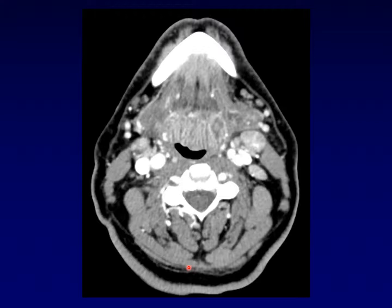The palatine tonsils can become infected, but the lingual tonsils will occasionally become infected as well, and have a very similar appearance. Once again, you can see that tiger stripe pattern, but now we're a little more inferior in the neck at the level of the lingual tonsil. Same basic idea — this is a lingual tonsillitis, much less common than infection of the palatine tonsils.